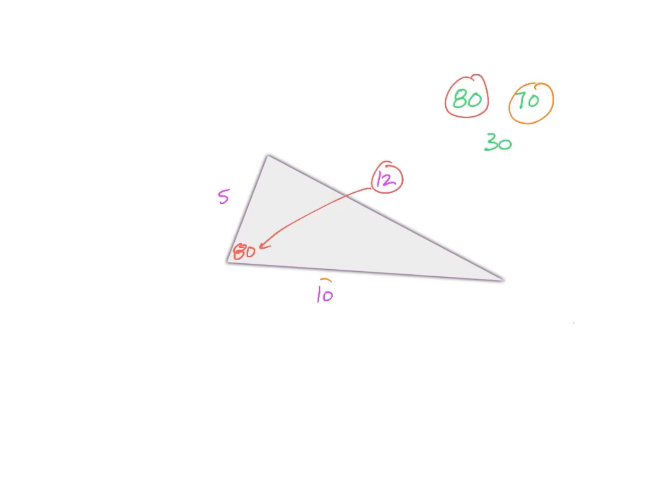Second biggest angle, find the second biggest side. This is where your 70 is going to end up. And then find your smallest angle, find your smallest side. That goes here.